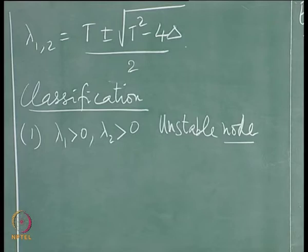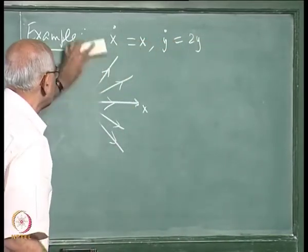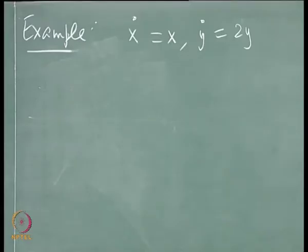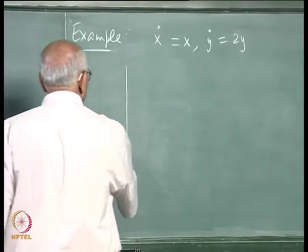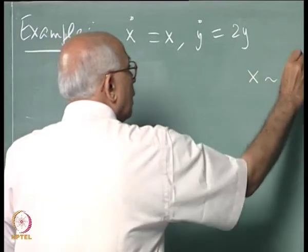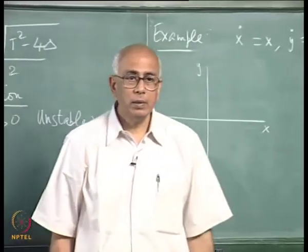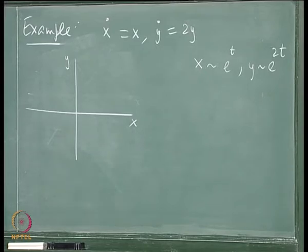What if the two eigenvalues had been unequal? Suppose instead y-dot = 2y. The two eigenvalues are 1 and 2, both positive, so the flow is again outwards. But what shape would the flow lines have? Since x goes like e^t and y goes like e^(2t), we get y ∝ x². The flow lines are parabolic in shape.